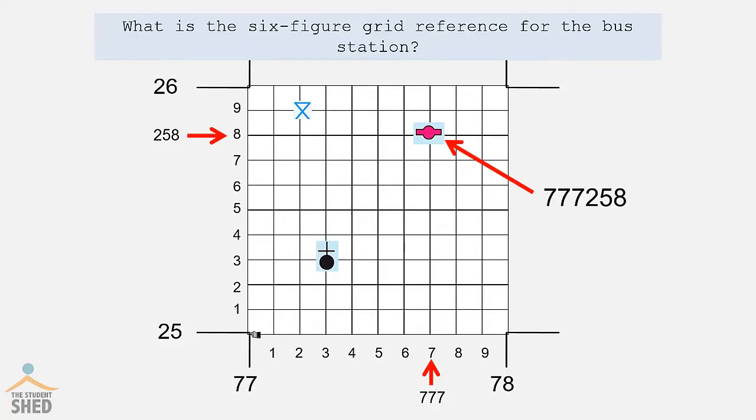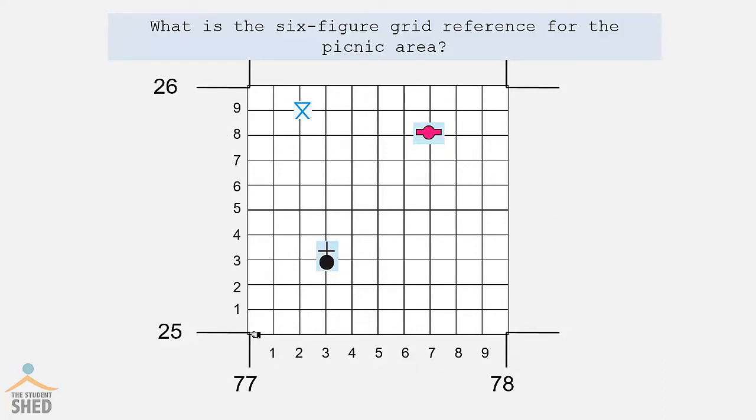What is the six-figure grid reference for the picnic area? 772259.